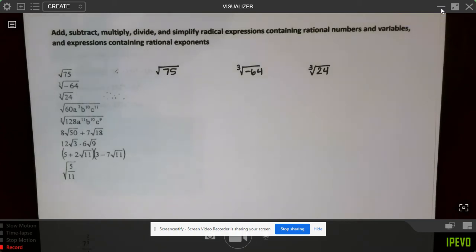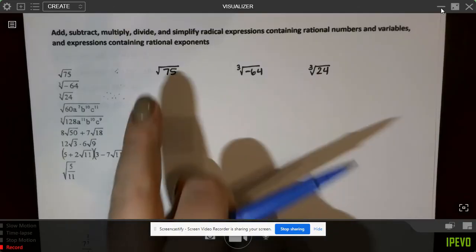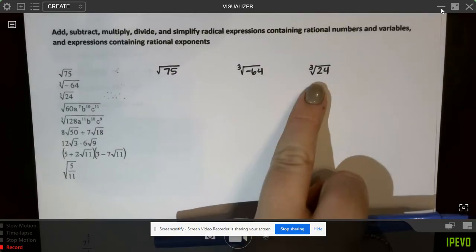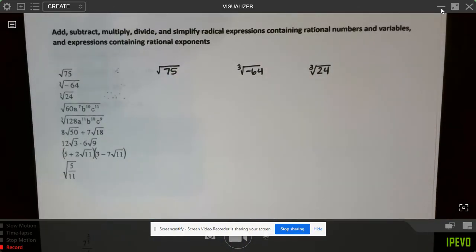All right, let's talk about simplifying radical expressions, and we're going to start with ones that only have numbers, no variables. You'll see we'll get to those in a minute.